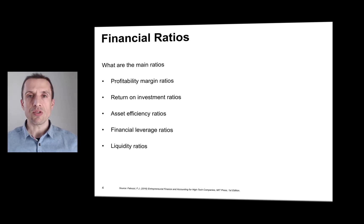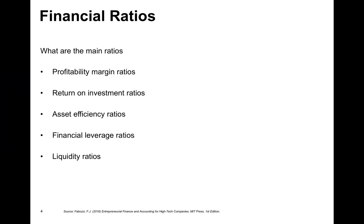There are many possible ratios. What we will focus on are the main ones. Those are the ones that indicate how well the company is being managed — the profitability margin ratios. We also look at return on investment ratios related to the returns generated for shareholders or other investors. It's also interesting to look at asset efficiency ratios — how well does this company manage their assets, how much revenue and profits are they able to generate? Similar companies with similar assets might obtain very different ratios here.